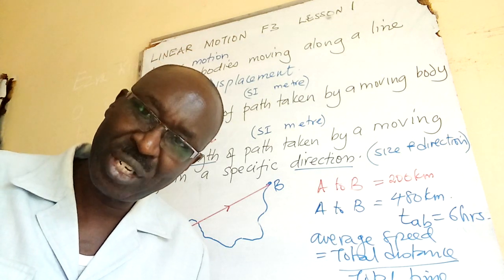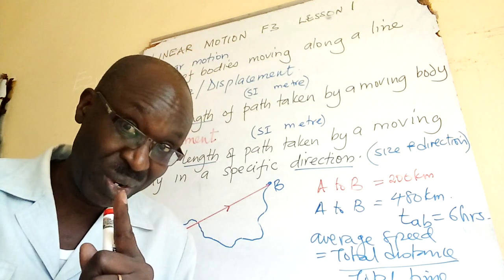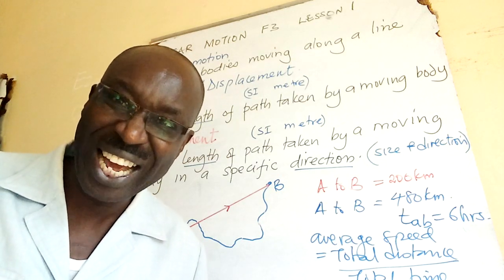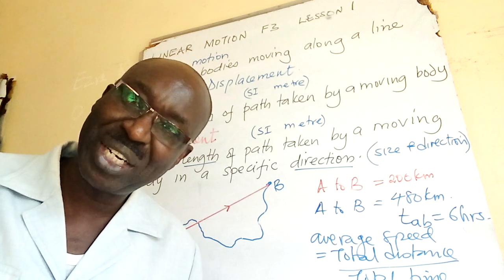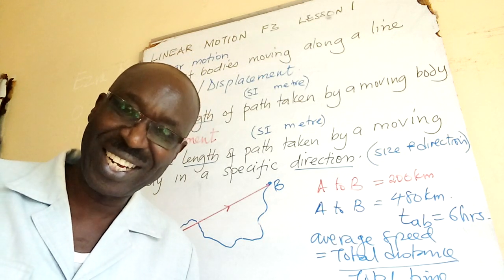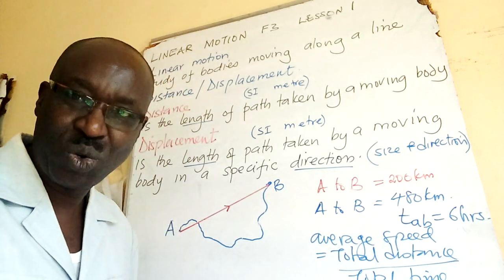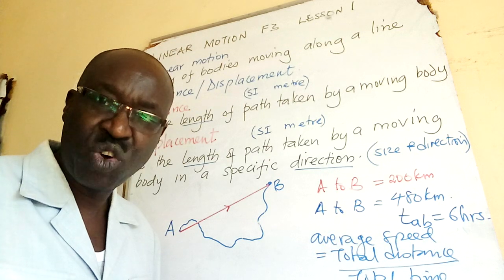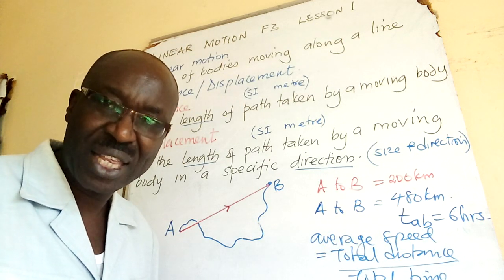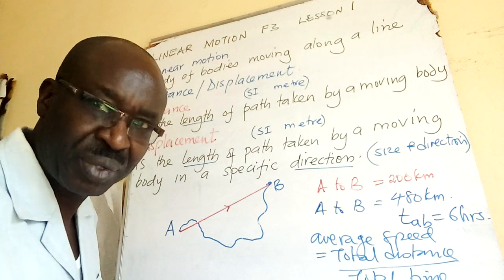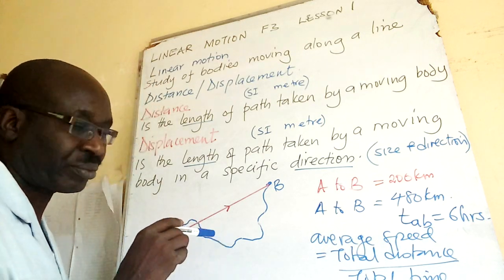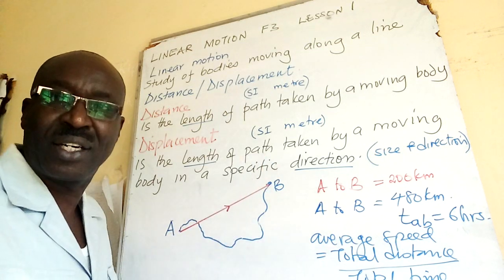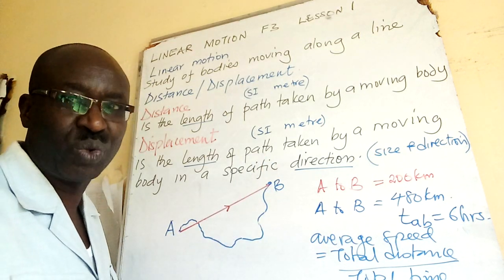A meter can measure both length and height. A ruler can measure length but it cannot measure height — that is food for thought. So I can get the length of the path taken by the blue route, and that is what we call distance.